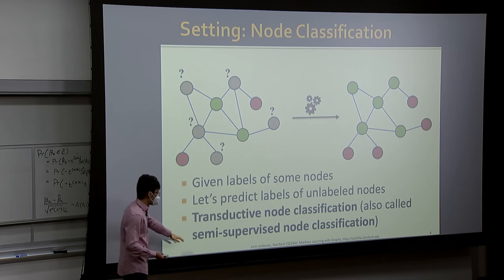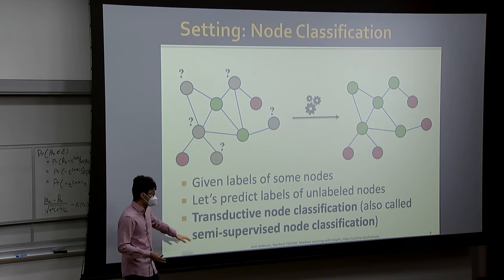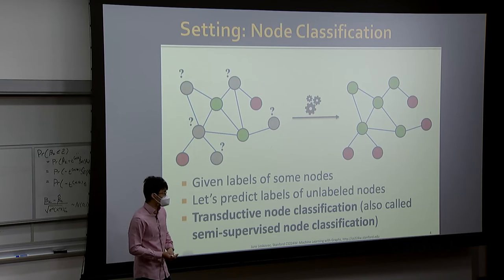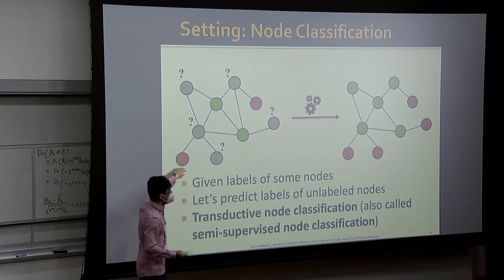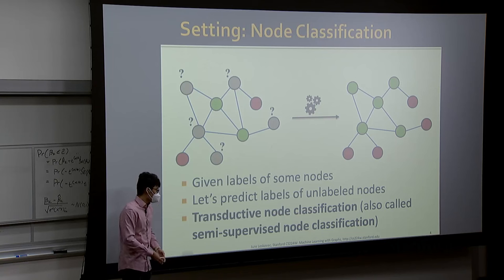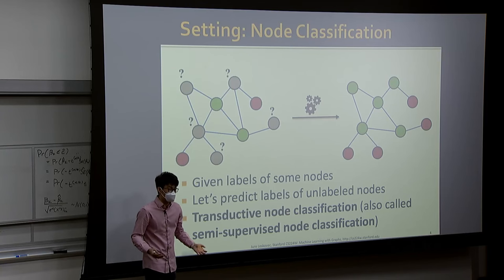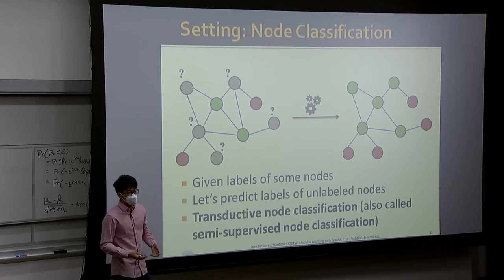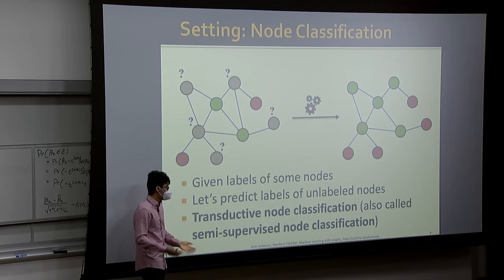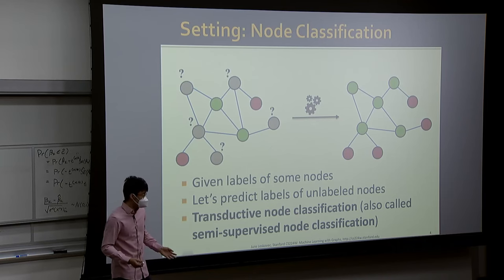Another name for this setting is semi-supervised node classification. The motivation is that usually the network is huge and we only know very few labels. So it's not a supervised learning task with many labels, but not an unsupervised task with no labels either — it's an intermediate state. That's why people also call it semi-supervised node classification.